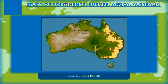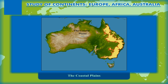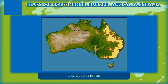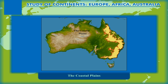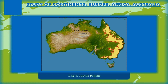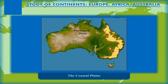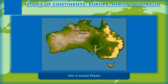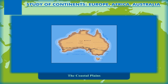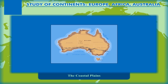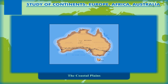The Coastal Plains include the narrow low-lying region to the east of the Great Dividing Range parallel to the coast, and the Nullarbor Plain in the south along the Great Australian Bight. A narrow strip of coastal plains also lies along the southwestern coast of the continent.